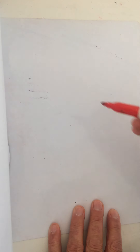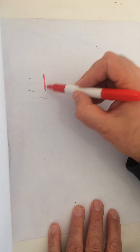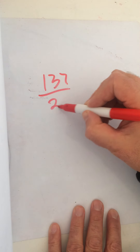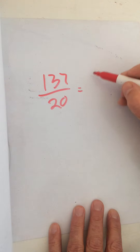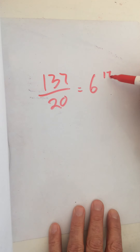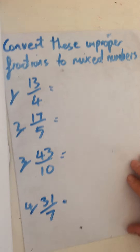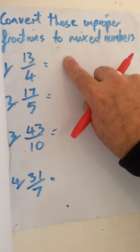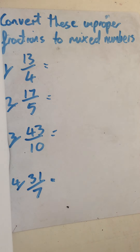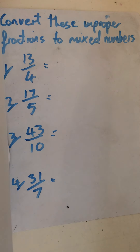With slightly bigger numbers it's just the same. One hundred and thirty-seven over twenty — how many twenties in 137? That will be six remainder seventeen, so six and seventeen twentieths. Could you please do these four questions — write out the question and then put the answer in afterwards. Pause the video while you do that and then we'll carry on.